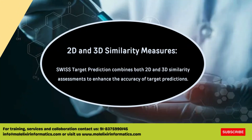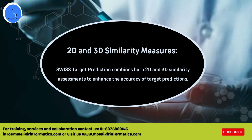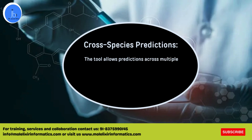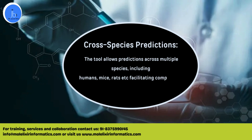The next feature is 2D and 3D similarity measures. Swiss Target Prediction combines both 2D and 3D similarity assessments to enhance the accuracy of target prediction. The tool also allows prediction across multiple species, including human, mice, rat, etc., thus facilitating comparative studies.